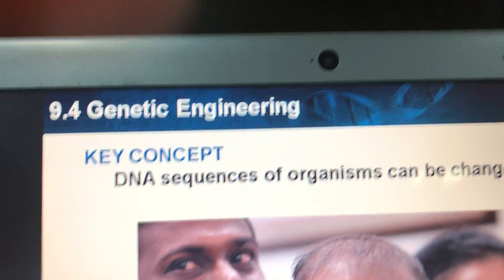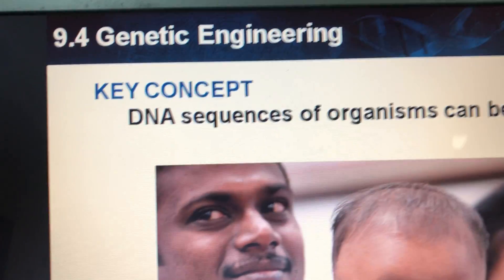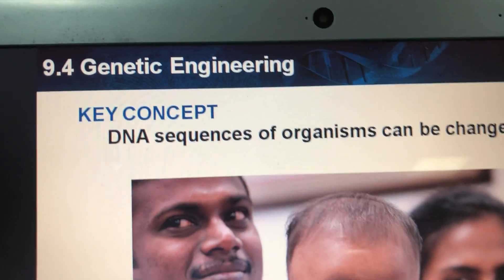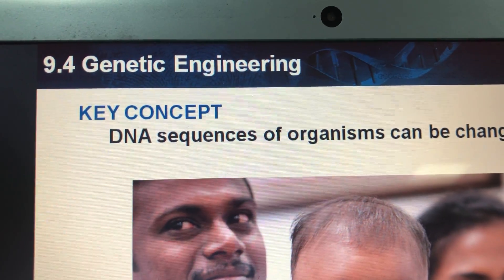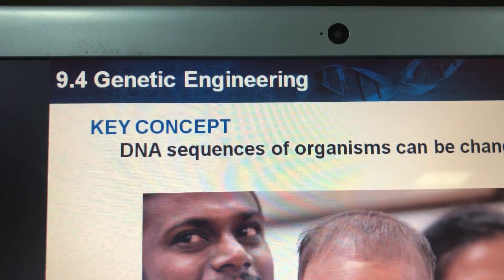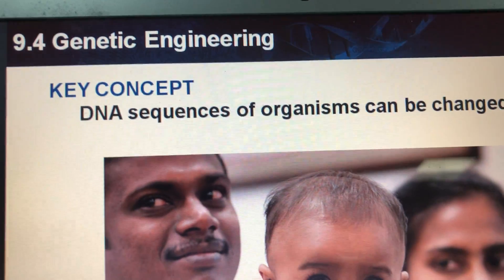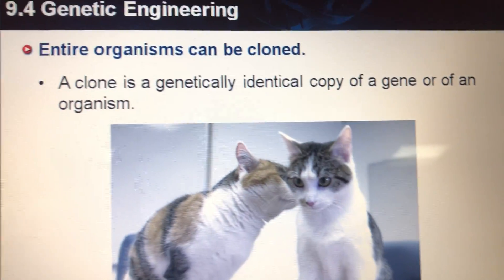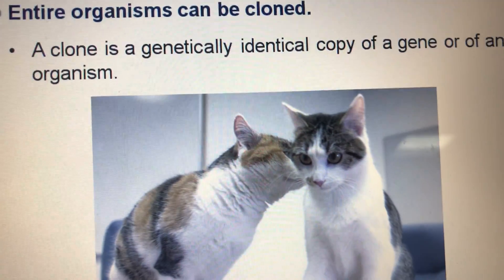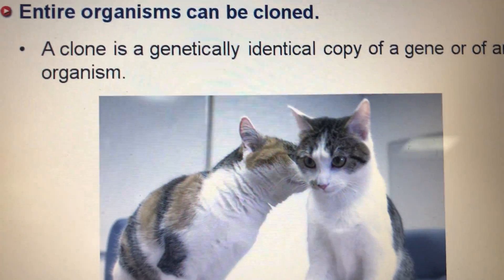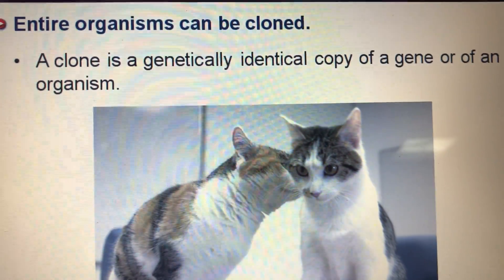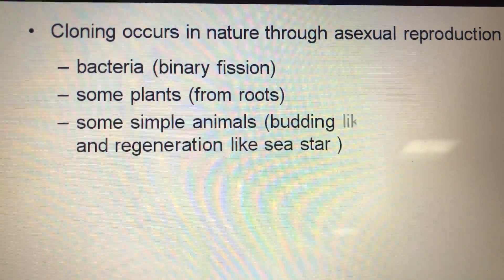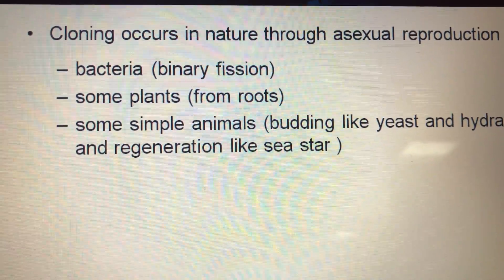Hello, grade 10. Today we are still in section 4, genetic engineering. From chapter 9, we learned that genetic engineering means changing the DNA sequence of organisms to give them new traits. First, we talk about cloning — cloning is a genetically identical copy of a gene or an organism. Cloning also occurs in nature.